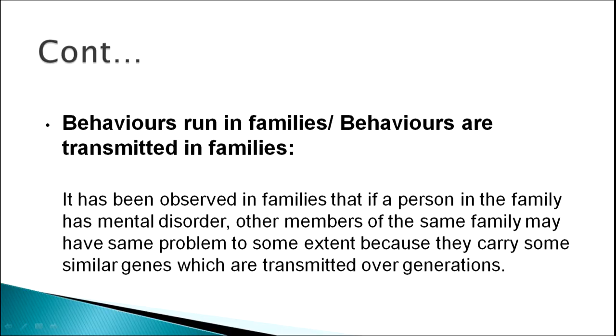Suppose any part of the chromosome is deleted or duplicated — there will be a change in our behavior. In Down syndrome, children having trisomy in the 21st chromosome are generally retarded, and the severity depends on the amount of the extra 21st chromosome present. Behaviors run in families and are transmitted within families. If a particular family has people with a good voice, successive generations will also likely have a good voice. Similarly, if certain disorders are present in a family, those disorders may also be inherited — it has been observed that if a person in a family has a mental disorder, other members may also have the same problem to some extent, as they carry similar genes transmitted over generations.